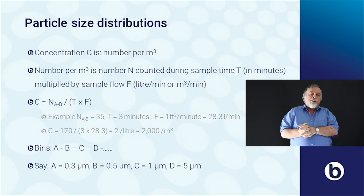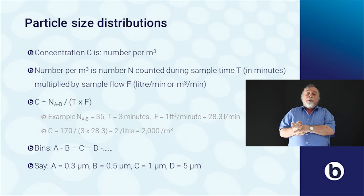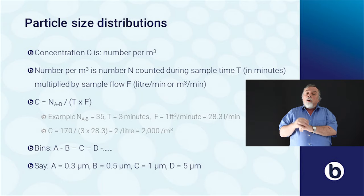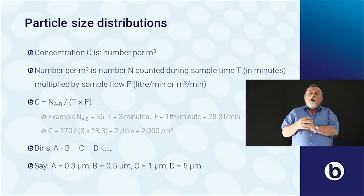Here is a small example: the number of particles counted between A and B is 35, the time is 3 minutes, and the flow is 28.3 liters per minute — one cubic foot per minute. If we calculate this, we find the result of 2 particles per liter of air, or 2000 particles per cubic meter.